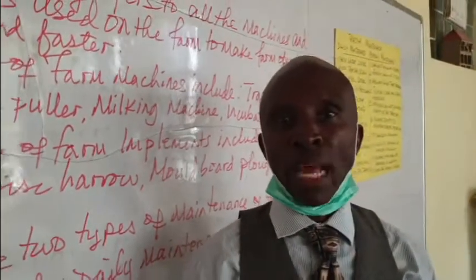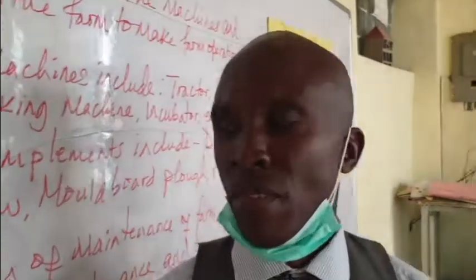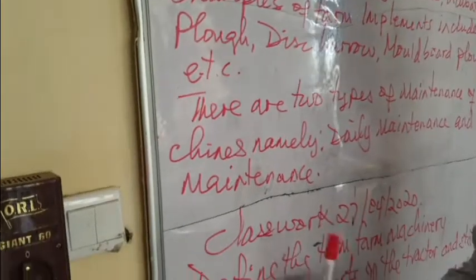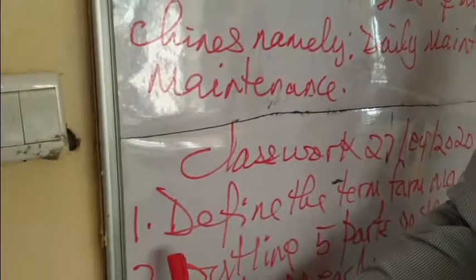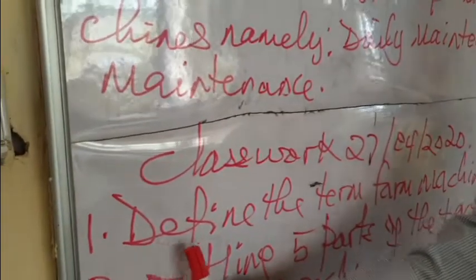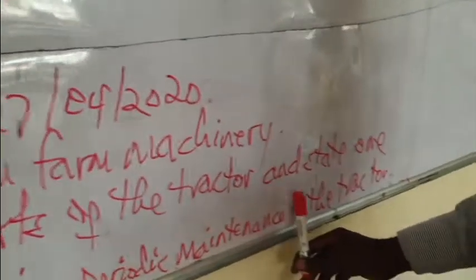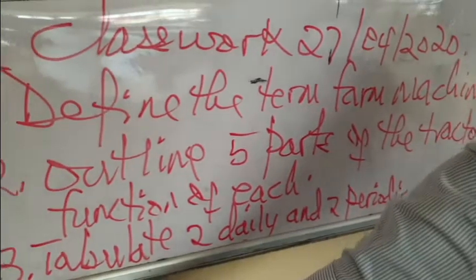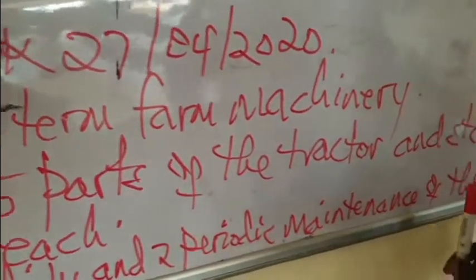So that is what we have for this topic. Now I have classwork for you. Classwork today, 27th April 2020. Number one: define the term farm machinery. Number two: outline five parts of the tractor and state one function of each. Number three: tabulate two daily and two periodic maintenance practices of the tractor. Thank you very much.